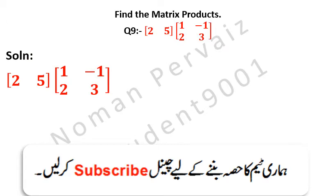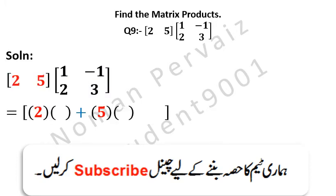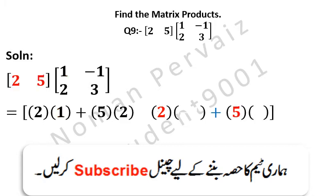Here we are taking the question as it is, equal to. Next we are going to multiply both matrices. First row of the first matrix is 2 and 5, so we write 2 and 5. First column of the second matrix is 1 and 2, so we write 1 and 2. First row of the first matrix is 2 and 5, so we write 2 and 5. Second column of the second matrix is minus 1 and 3, so we write minus 1 and 3.